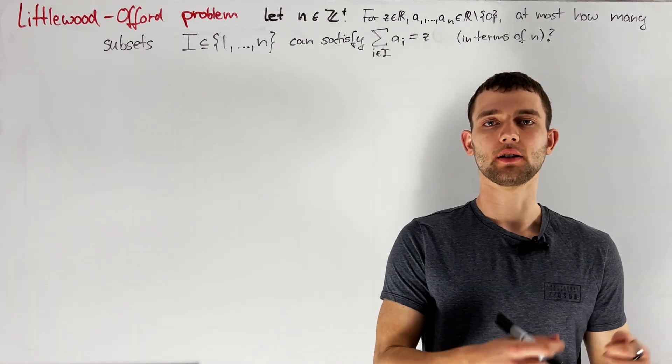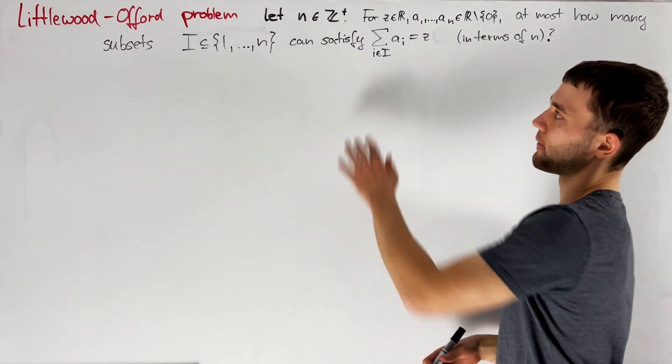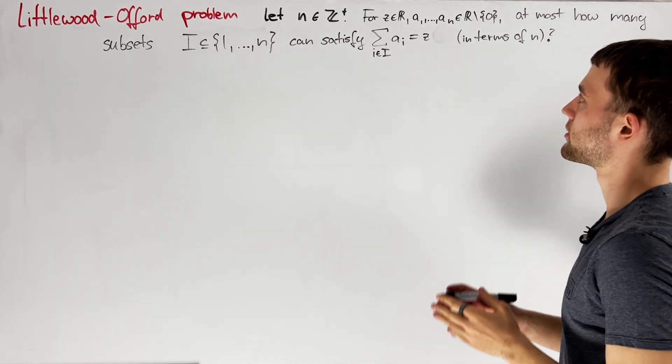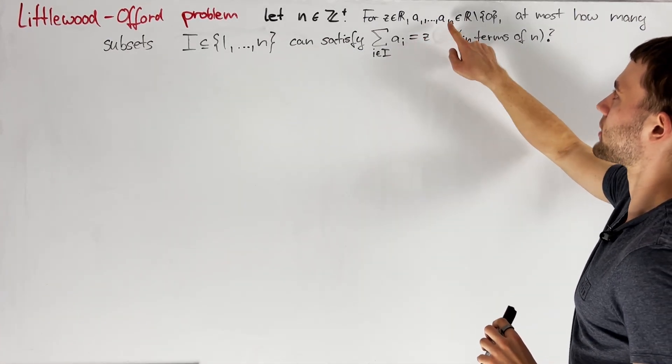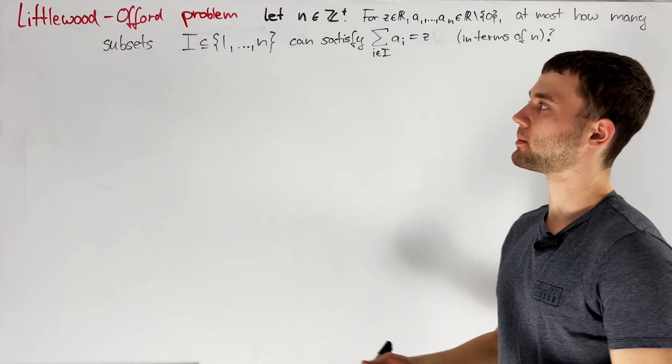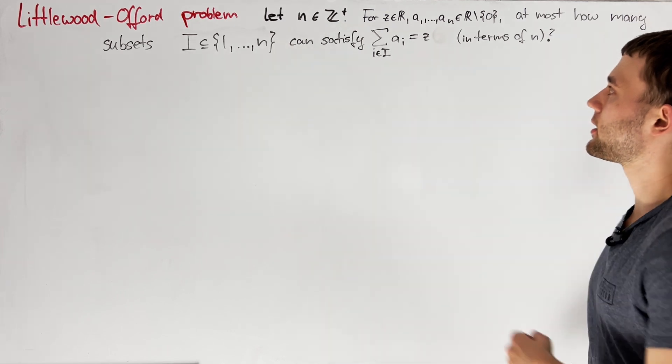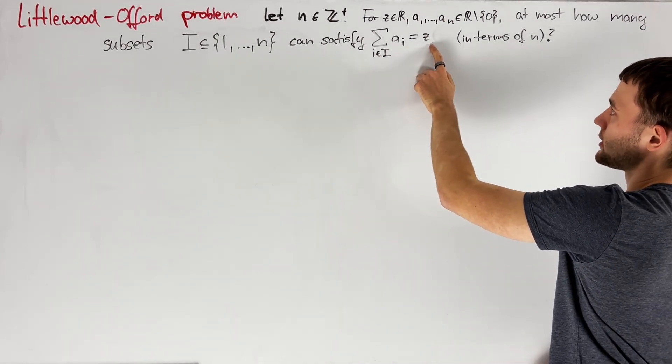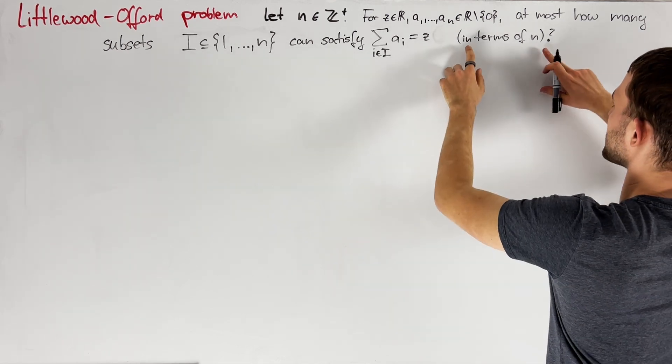Noting that the actual Littlewood-Offord problem is more general, we are going to be interested in the following. We give ourselves a positive integer n and now consider a real number z and non-zero real numbers a1 up to an. And we ask ourselves, what is the maximum possible number of subsets i of 1 to n, such that the sum of ai for i in i is equal to z. And we want to upper bound this number of subsets in terms of just n.